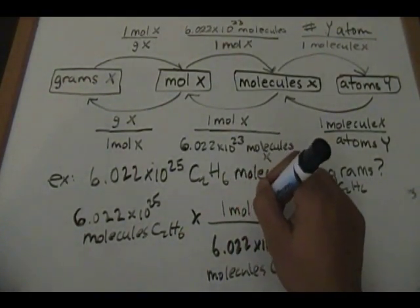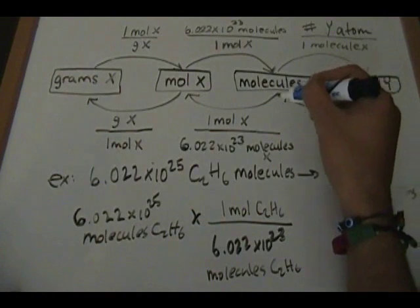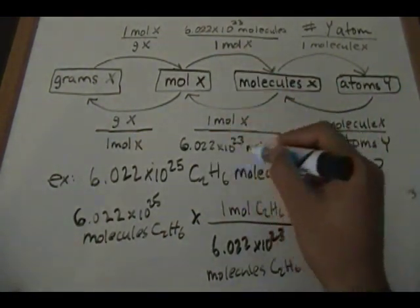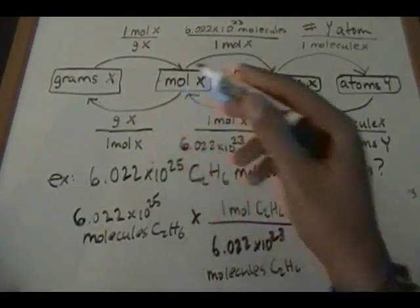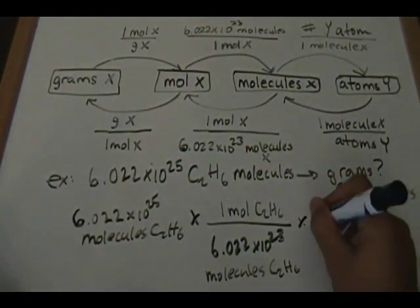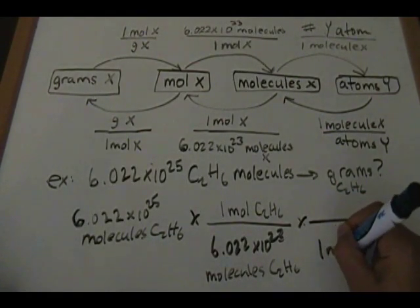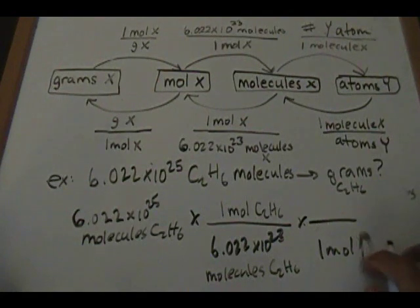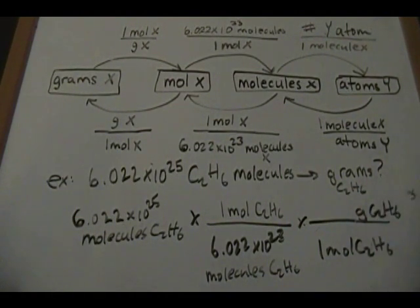On top we put 1 mole of C₂H₆ (ethane). So we've managed to get from molecules to moles using this first conversion factor. Now we're at moles, so we're going to go from moles to grams using the next conversion factor, which is essentially the molar mass. We multiply by the molar mass, with 1 mole of C₂H₆ on the bottom and grams of C₂H₆ on top.